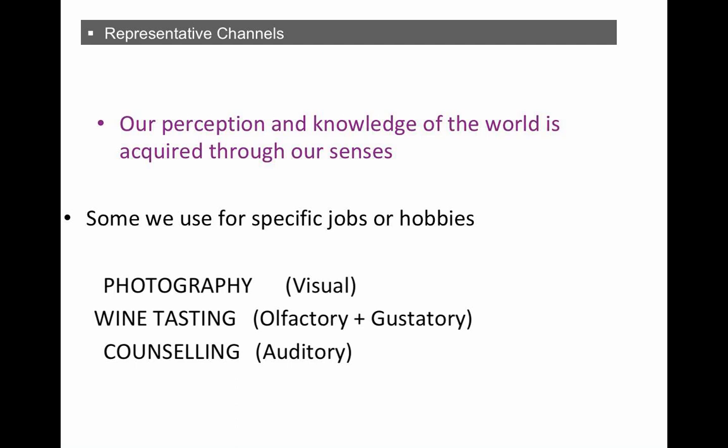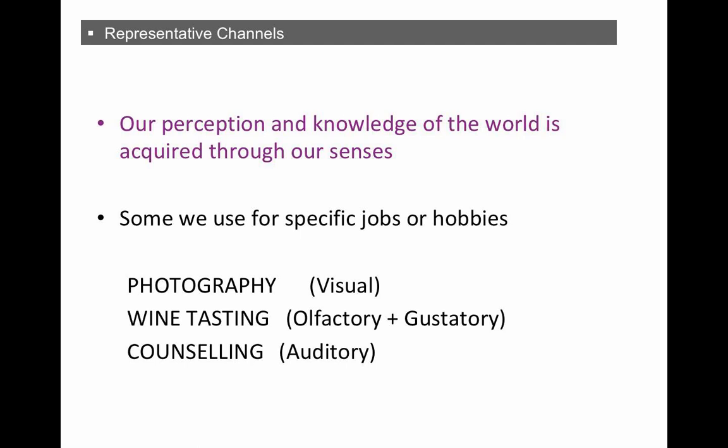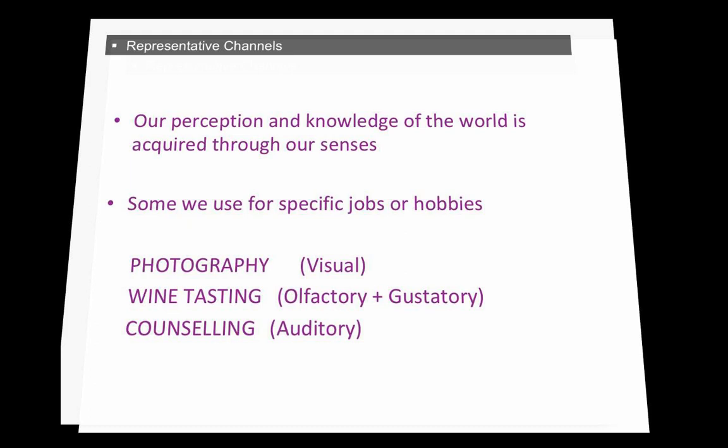So obviously what we see, what we hear, our perception, knowledge of the world, is acquired through our senses. Some we use for specific jobs. If you're a HUMINT operator, then you'll be using these skills. Or maybe hobbies like photography, wine tasting, counseling. And you use different representative channels for those jobs or hobbies. So in photography, it's all about the visual. Wine tasting, it's obviously the tasting of it, the scent, the smell. And counseling, it's listening. Being able to listen to people and make the right signals that makes them feel better, or at least makes them feel that you're building rapport with them.